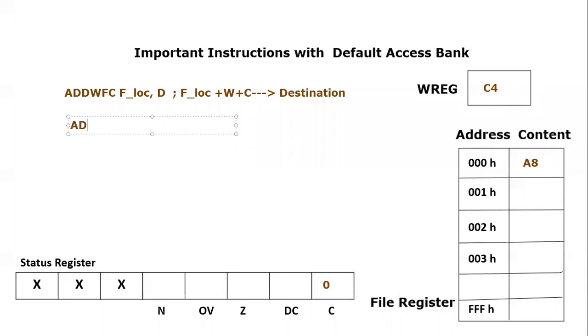Let's run a simple instruction. Add working with file with carry, and the file register we are using is 00 hex. So 00 hex comma, and let's say we want to put the destination or result inside the working register, so we will mention W here. What will happen is file register location data which is A8 hex, plus C4 working register, plus carry. Carry is basically zero, so that will go inside working register.